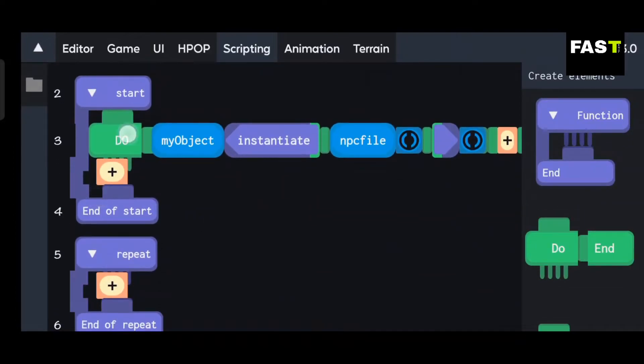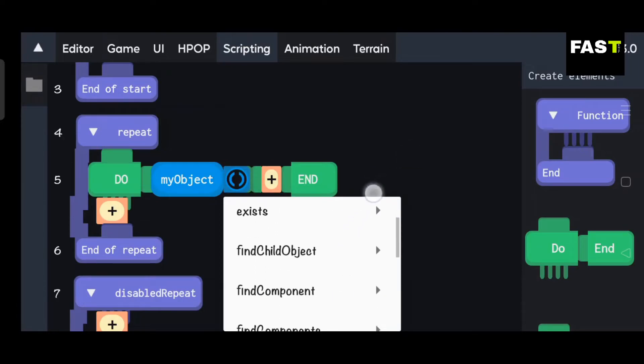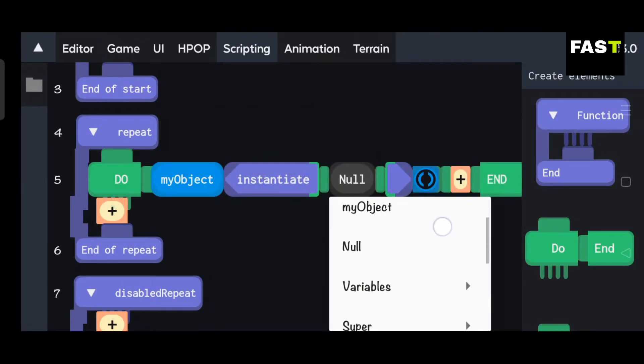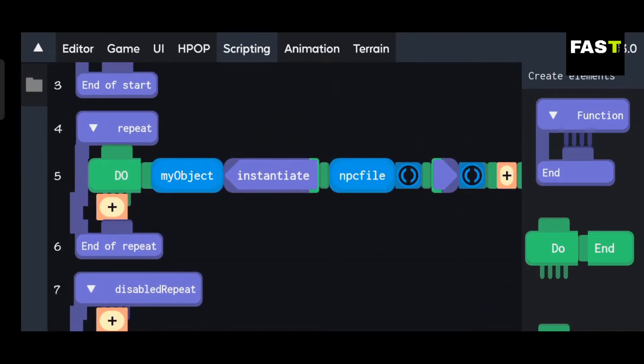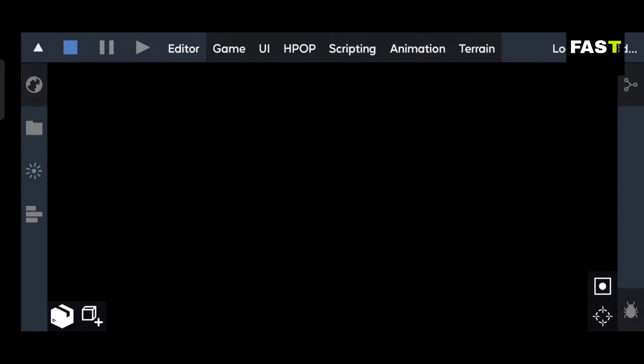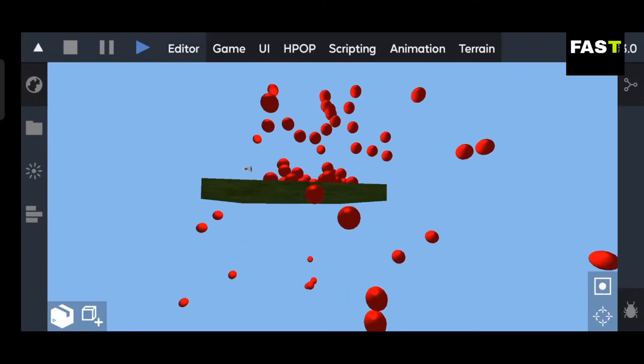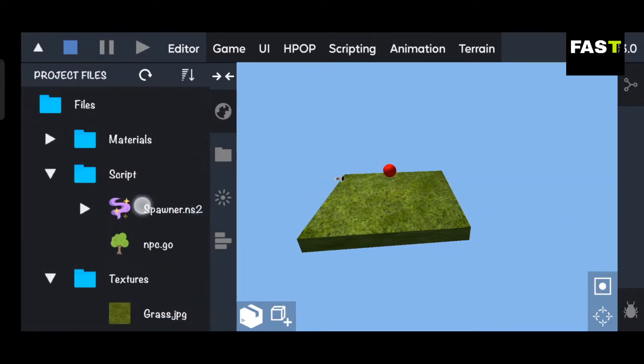Let's put it in repeat method so it will spawn every frame. The object is spawning every frame, but it's too fast. We have to do something.